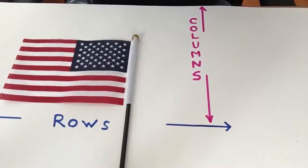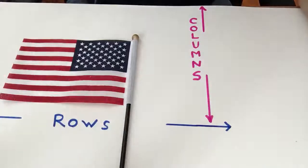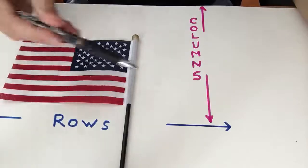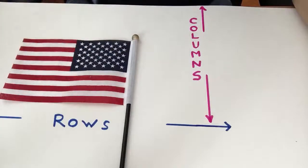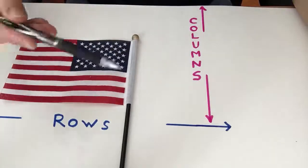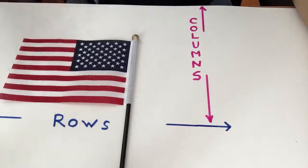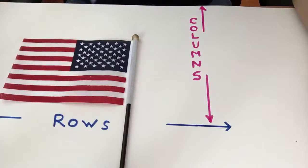Is it an array? Yes? No? Why? Does it have rows that go from side to side? Does it have columns that go from top to bottom? How many columns? How many rows? Why is it an array, or why is it not?